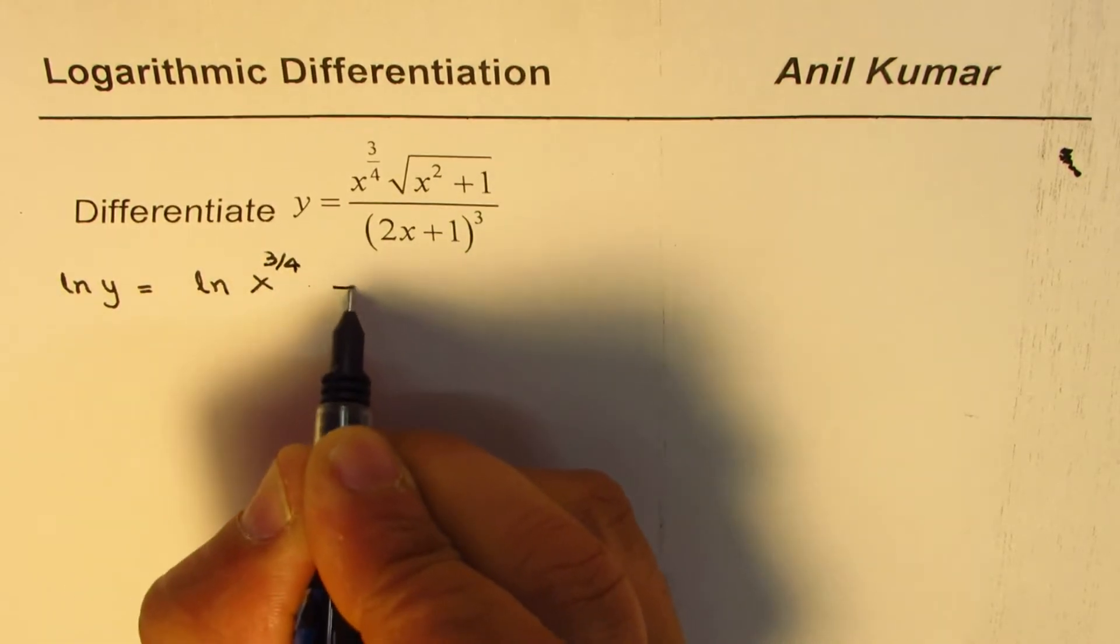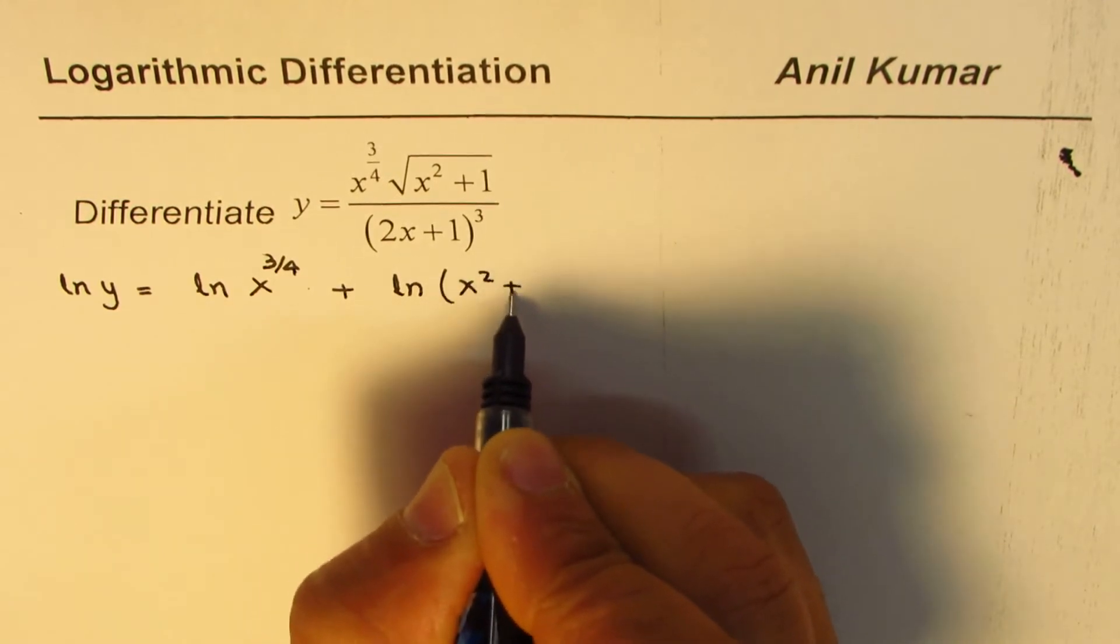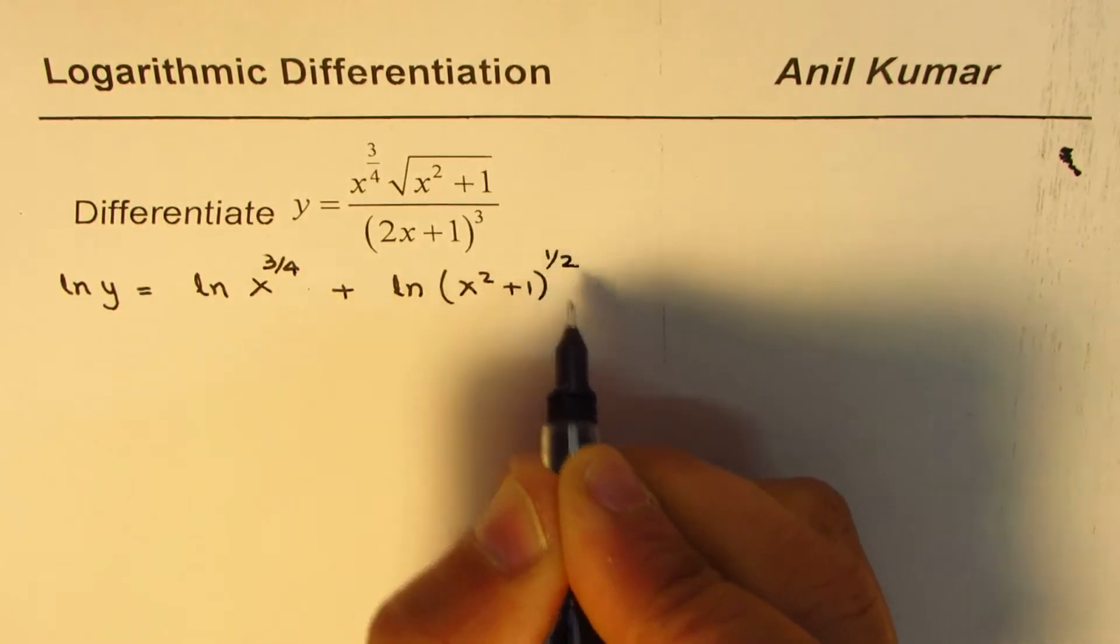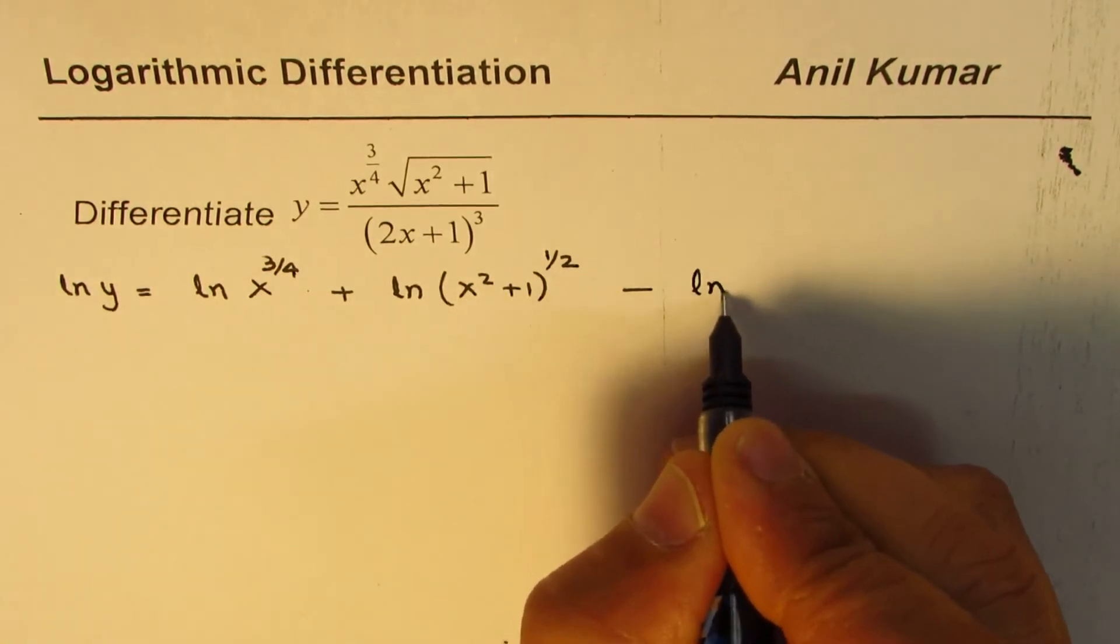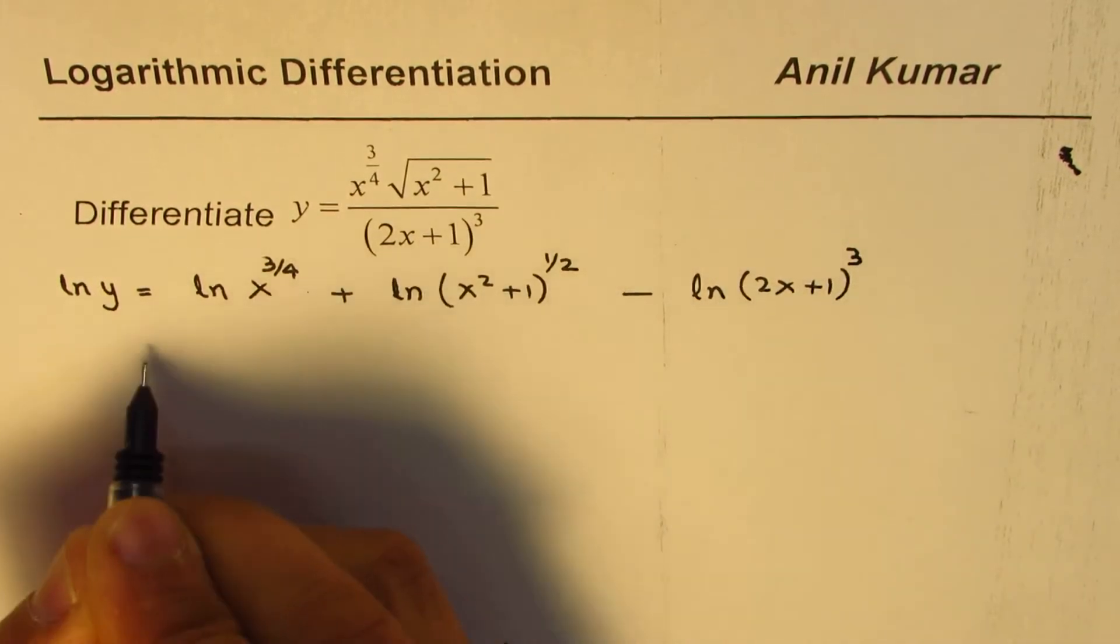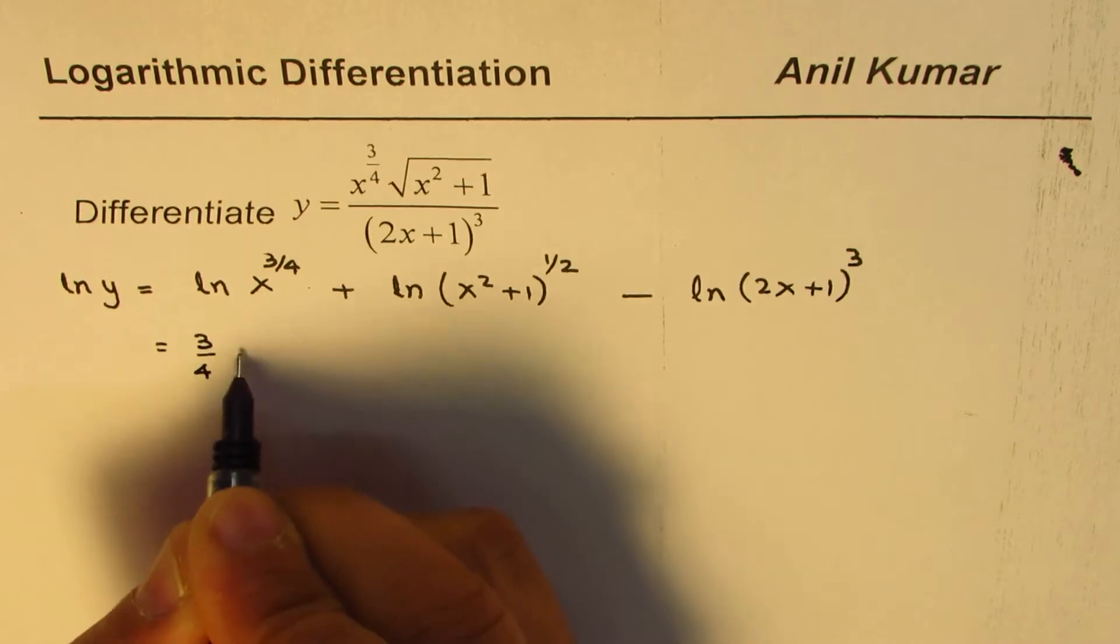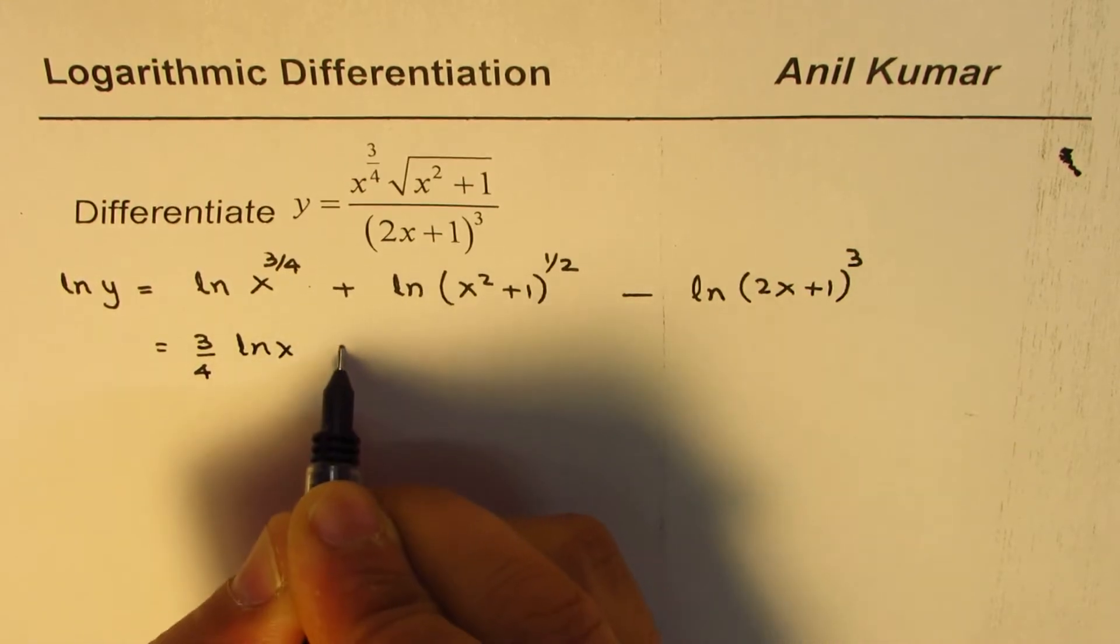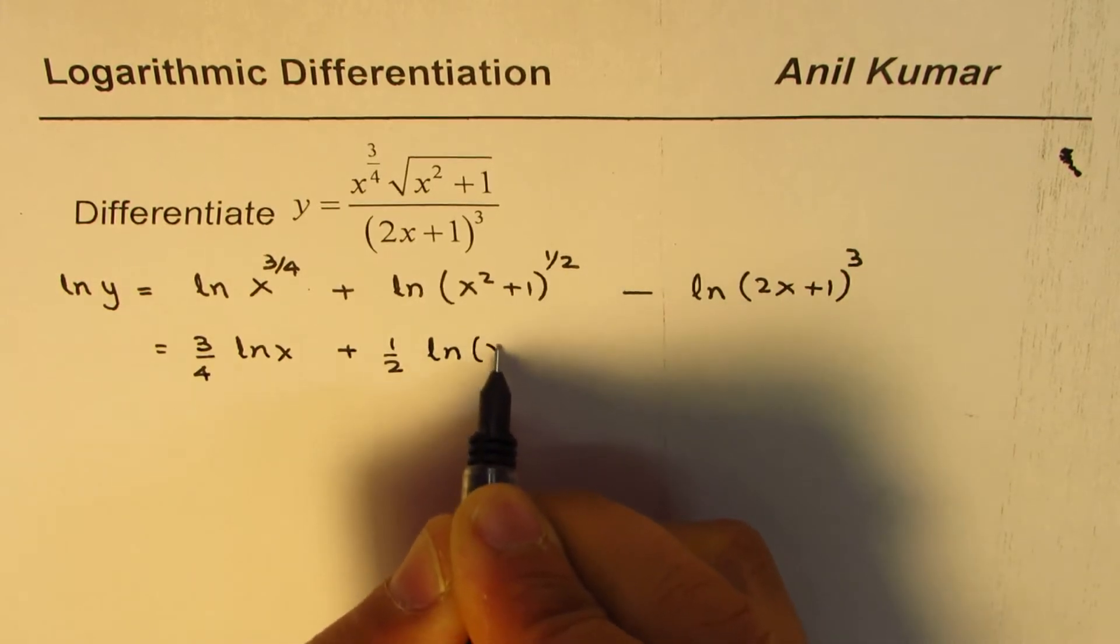...this is in the denominator, right, so it should be ln((2x + 1)³). Now that could be written as 3/4 ln x plus 1/2 ln(x² + 1) minus 3 ln(2x + 1).